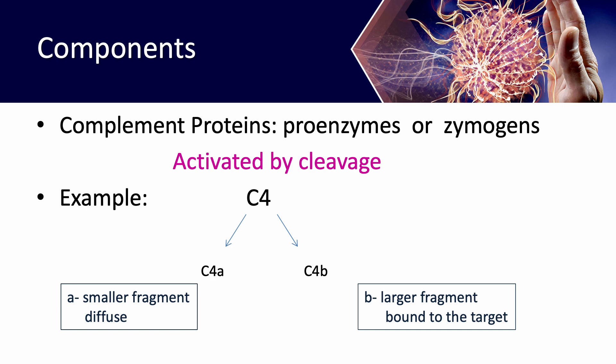Activation occurs through proteolytic cleavage — for example, C1 to C2. The inactive pro-enzyme is cleaved to the active enzyme form. When a component is cleaved, it produces two different fragments. These fragments are designated with small letters: A for the smaller fragment and B for the larger fragment.